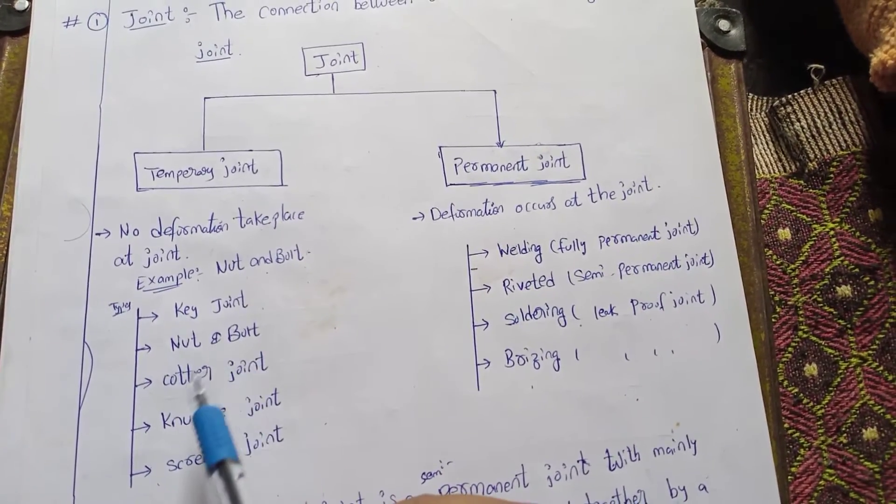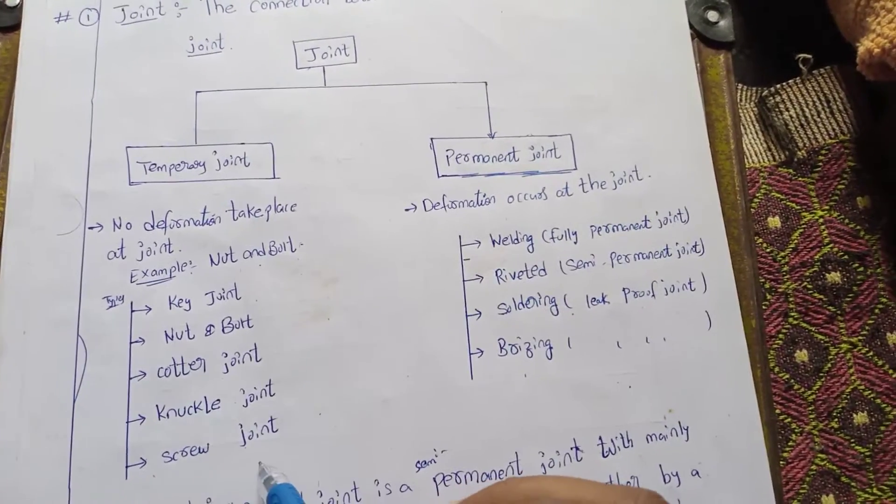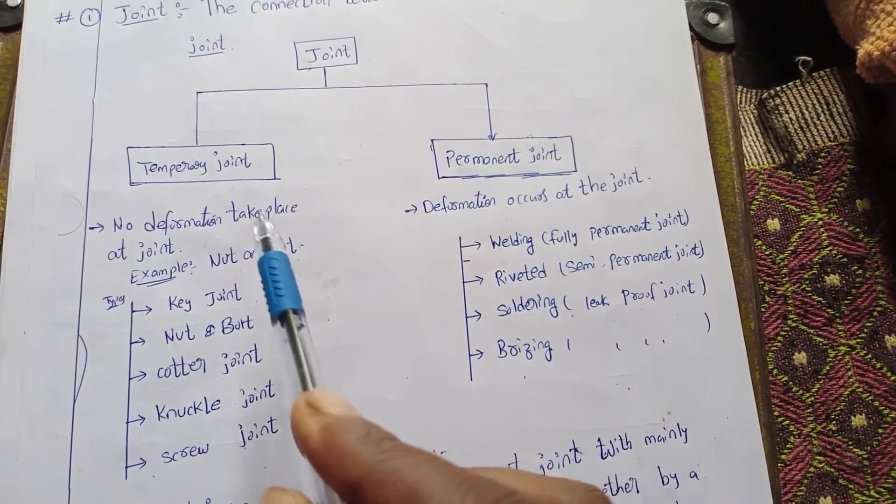Examples of temporary joints: key joint, nut joint, cotter joint, knuckle joint, screw joint. These are the examples for the temporary joint.